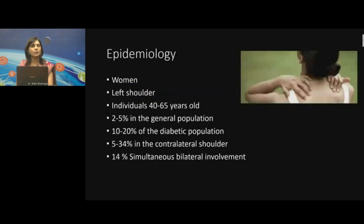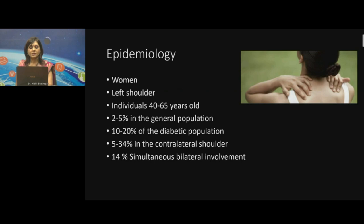A quick touch upon the epidemiology: it's more commonly seen in women, usually the left shoulder, in individuals between 40 to 65 years of age, with an occurrence rate of approximately 2% to 5% in the general population and 10% to 20% in the diabetic population. 5% to 34% may have the chance of having it in the contralateral shoulder at some point, and simultaneous bilateral involvement has been found in approximately 14% of individuals.